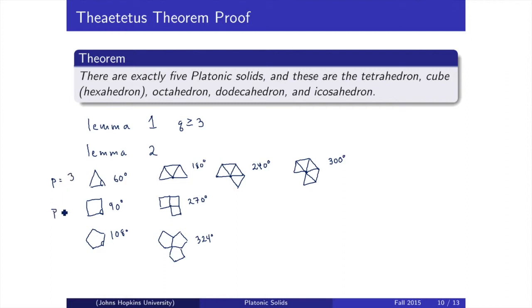Now, when P equals 3, there are only three possible values for Q: namely, Q equals 3, Q equals 4, or Q equals 5. When P equals 4, we know that the only possible value for Q is 3. When P equals 5, the only possible value for Q is also 3. Thus, the Schläfli symbol of a platonic solid must be one of these five. Therefore, there are, at most, five different platonic solids. And since we know of five different platonic solids, there must be exactly these five platonic solids.